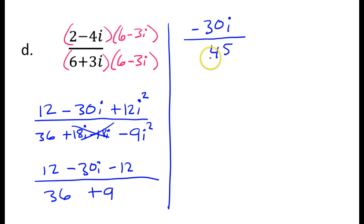So I should actually go ahead and simplify this. I noticed that both of these are divisible by 5. So this would be negative 6i divided by 9. And then both of these are divisible by 3. So I guess I could have divided by 15 in the first place. So that's going to be negative 2 over 3. So the final answer here should be negative 2i over 3.